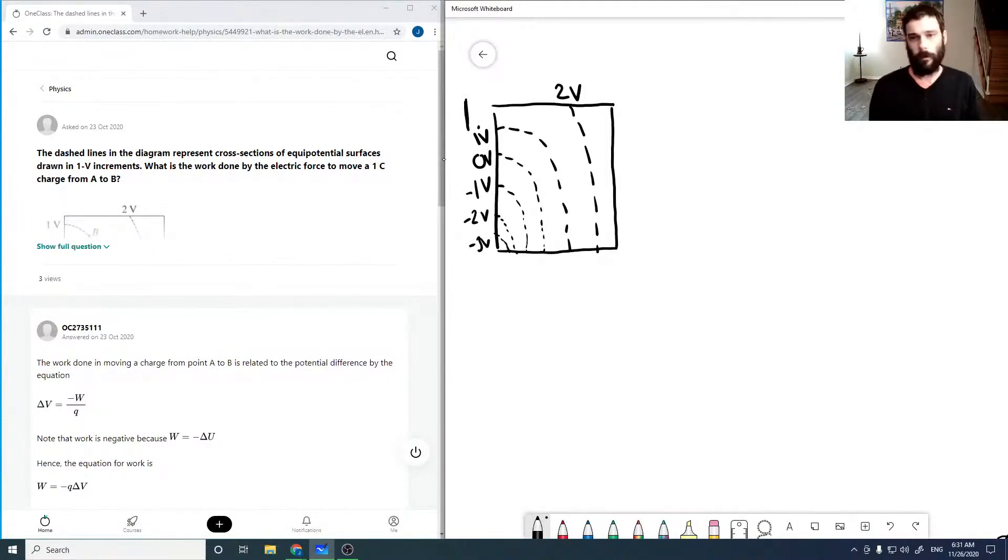And then there's a couple points, B and A. There are a couple other points, but they're not important for us. And the question just asks, how much work is done in moving a one coulomb charge from A to B?